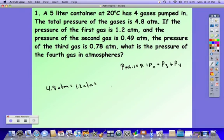The first gas is 1.2 ATM, the second gas is 0.49 ATM, and the third gas is 0.78 ATM. We can figure out the pressure of gas 4 by simply subtracting. Double check all of them have the same unit. If not, you'd have to convert to make sure they are in the correct unit before subtracting or adding. So the pressure of gas 4 is 2.33 ATM.